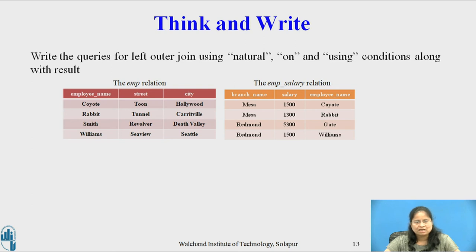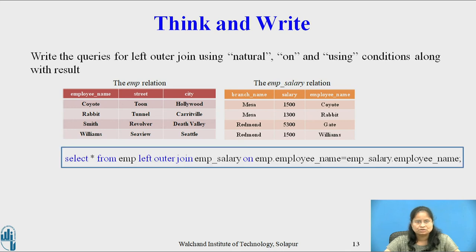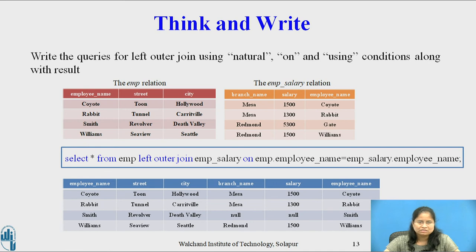Now consider the left outer join using the ON condition. The query is: SELECT * FROM emp LEFT OUTER JOIN emp_salary ON emp.employee_name = emp_salary.employee_name. The result is shown on this slide, which contains the common attribute employee name appearing twice.